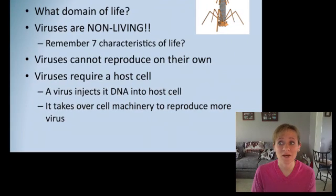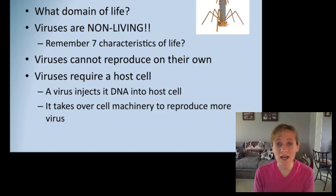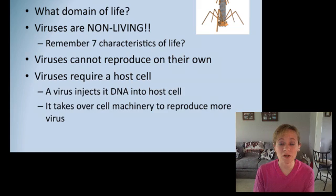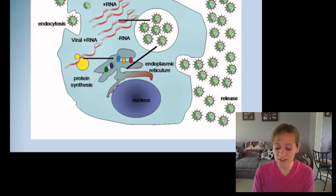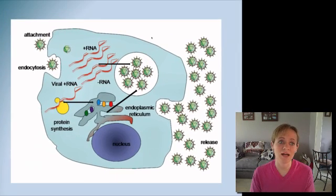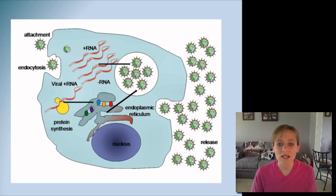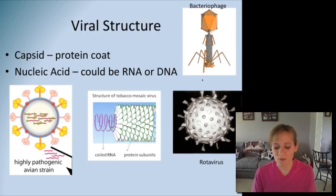Viruses require a host cell — in a sense, they're a parasite. What they do is inject their DNA or RNA, whatever nucleic acid, into the host cell, and then manipulate and take over the host cell's machinery and all the organelles in order to reproduce more viral cells. Here's a simple picture of what that looks like: the virus gets into the host cell, takes over the protein machinery and the endoplasmic reticulum, creates more viral cells, and then the new viral cells are released from the host cell.